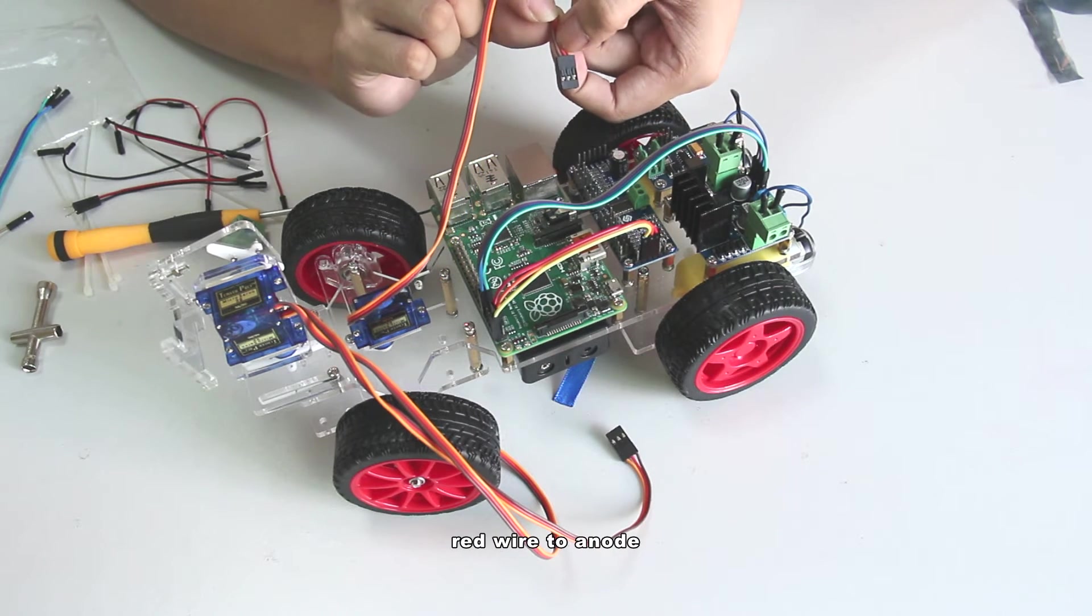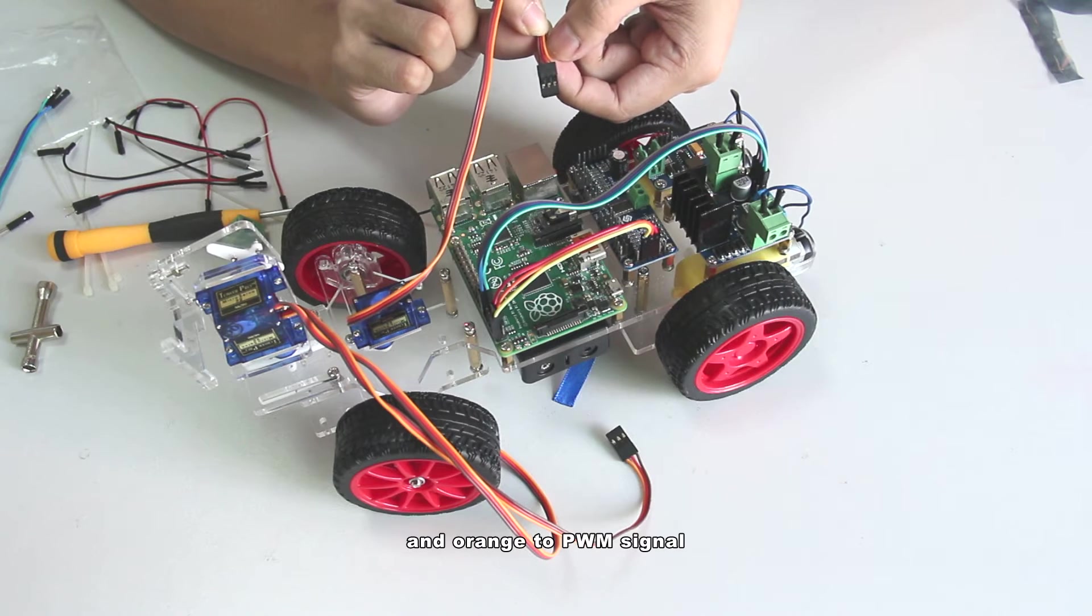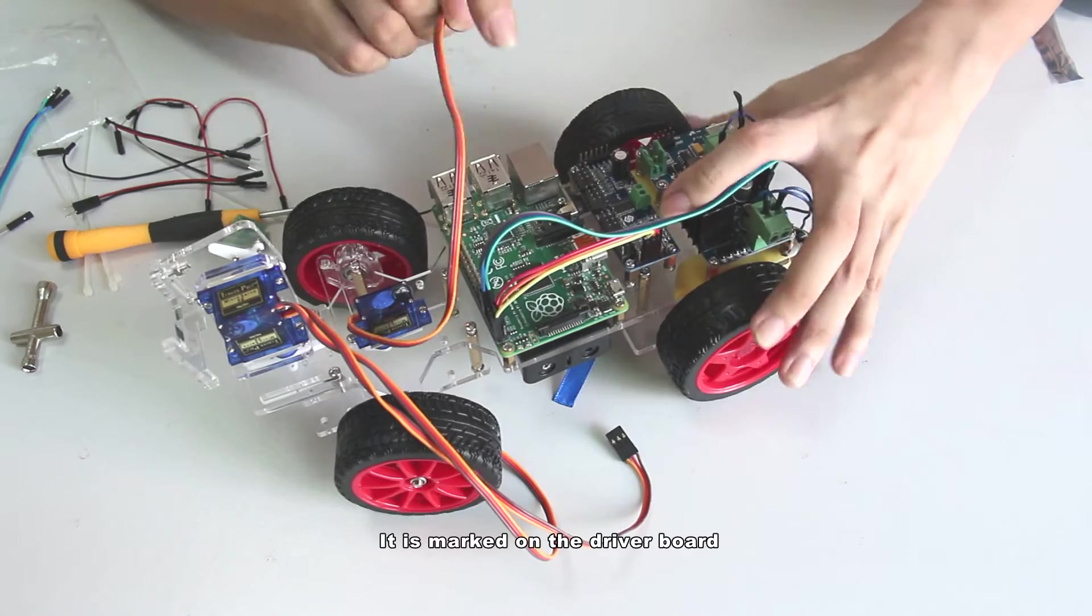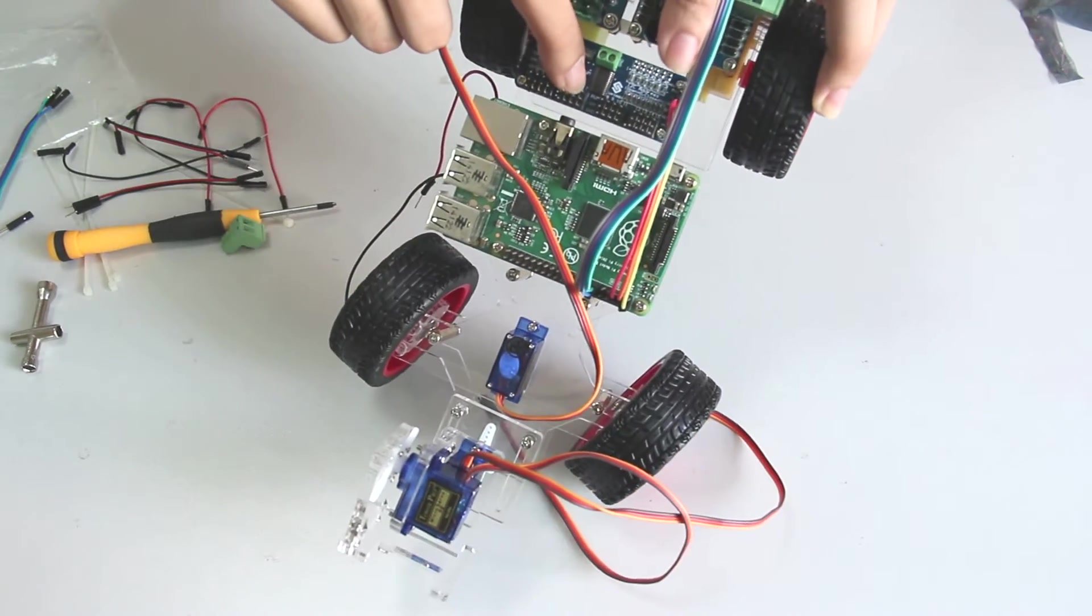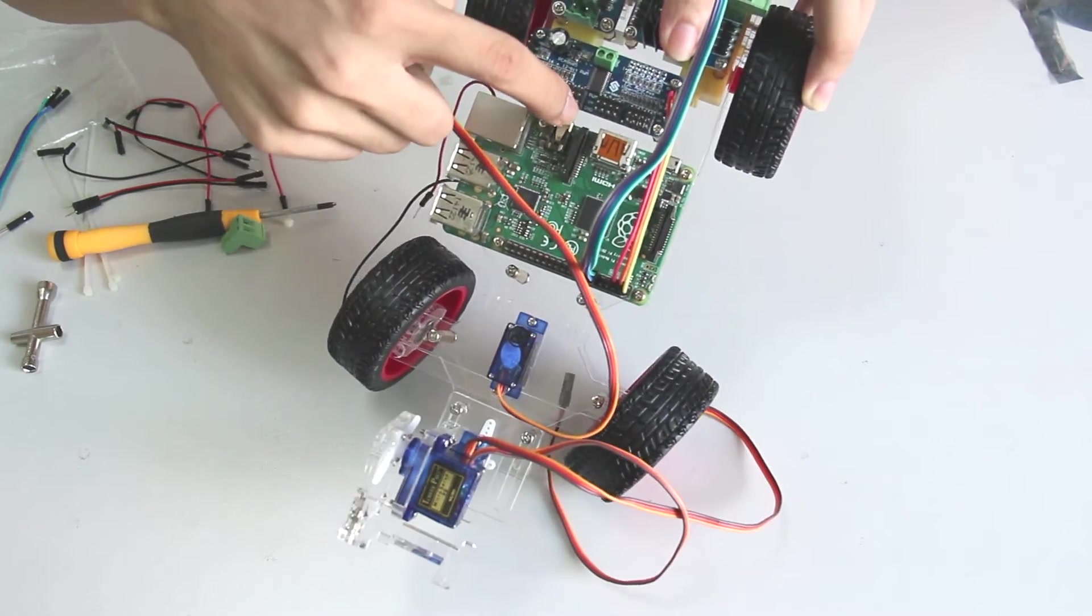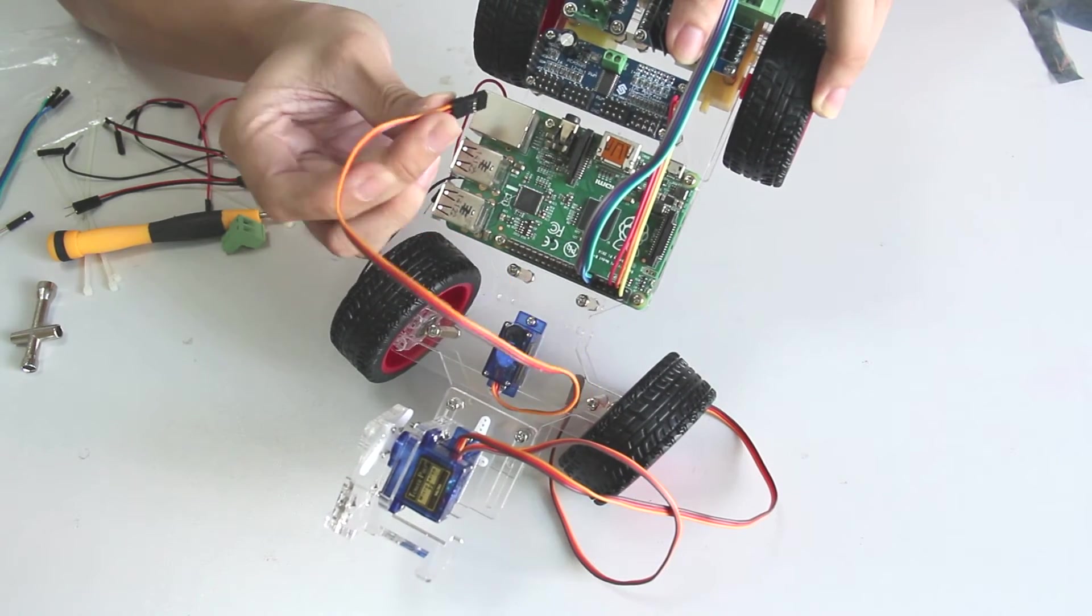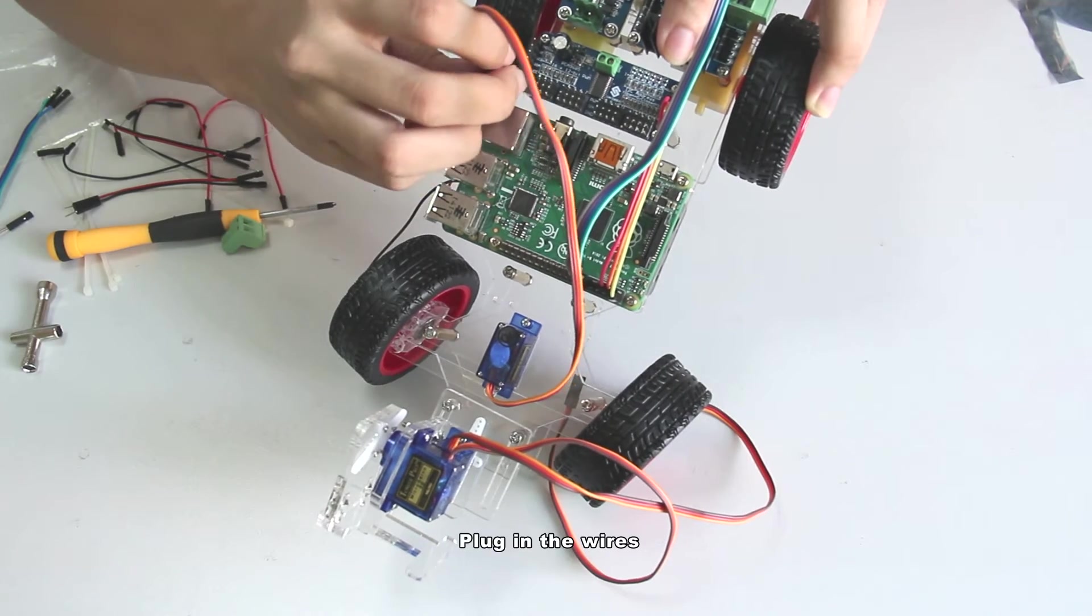The brown is to GND, red wire to anode and orange to PWM signal. It is marked on the driver board. Here in the middle. Plug in the wires.